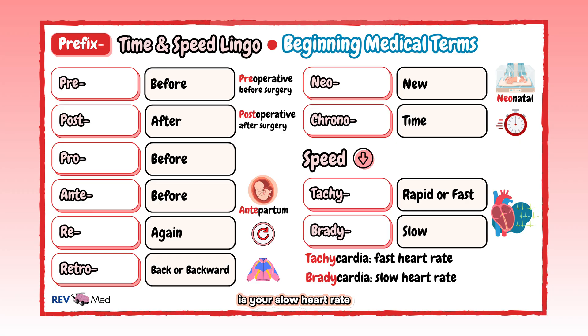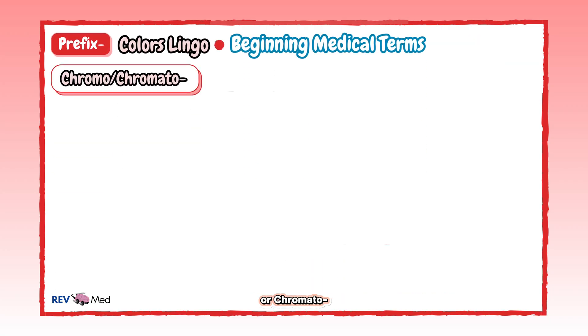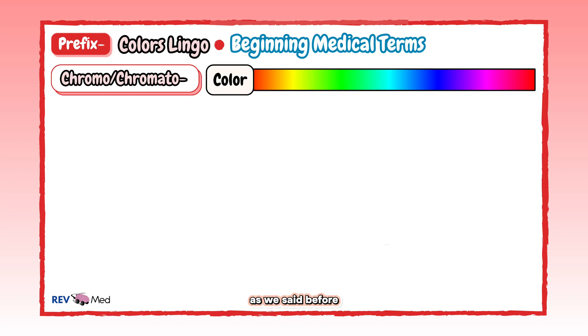For speed prefixes: tachy means fast and brady means slow. You'll see these used a lot with the heart — tachycardia is a fast heart rate and bradycardia is a slow heart rate.